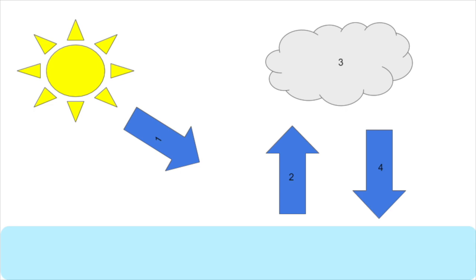2 represents evaporation. Evaporation is the process by which water turns into water vapor. The arrow from 1 is pointing towards 2 because the heat from the sun is what causes evaporation to occur.